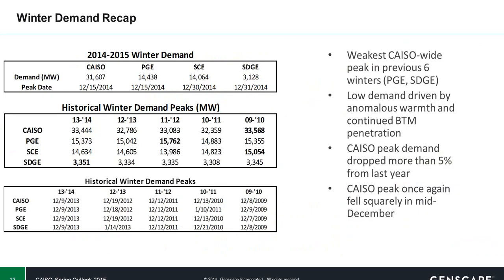Moving into the demand part of winter 2014-2015 and historical look back, we did see a demand peak in December, which isn't out of the ordinary, of 30% of the 31.6 gigawatts. Breaking out by region, we saw 14.4 gigs for PG&E, 14.1 gigs for SCE, and 3.1 gigs for San Diego.